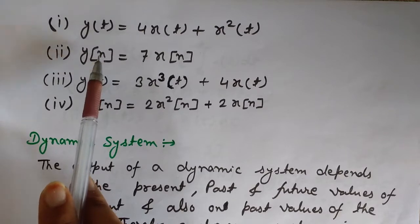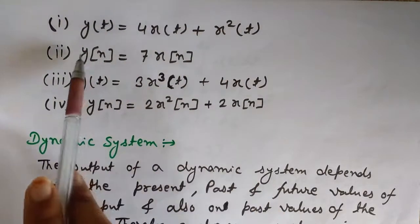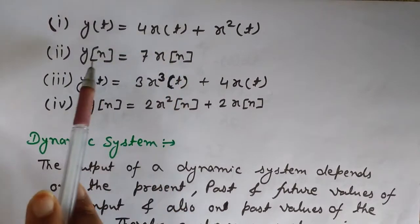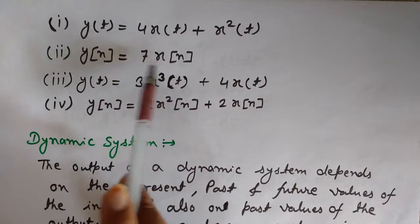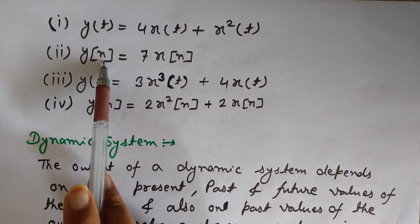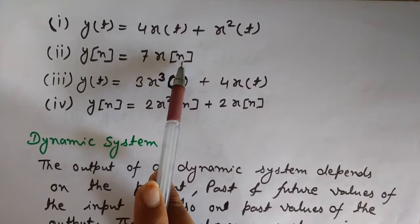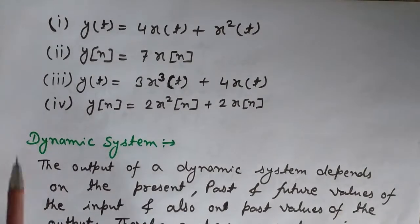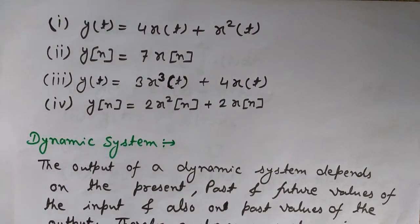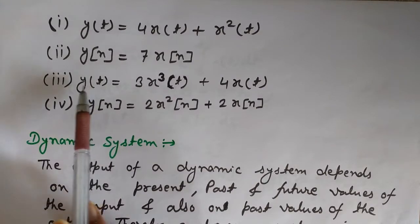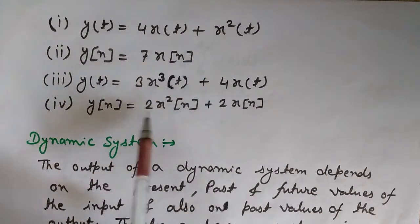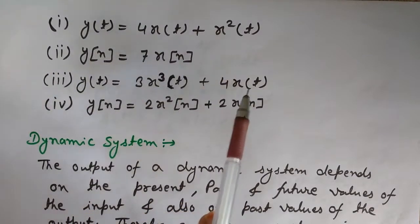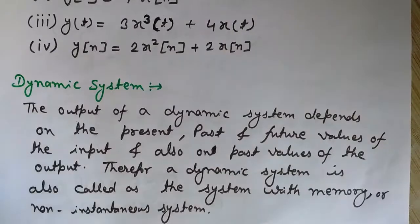Similarly, for the discrete-time example y[n] = 7x[n], substitute any value of n and you will see that the output at any instant is dependent only on the input at that same instant. We will see how this is different from dynamic systems, where the output is dependent on previous and future values, as well as the present value of the input.